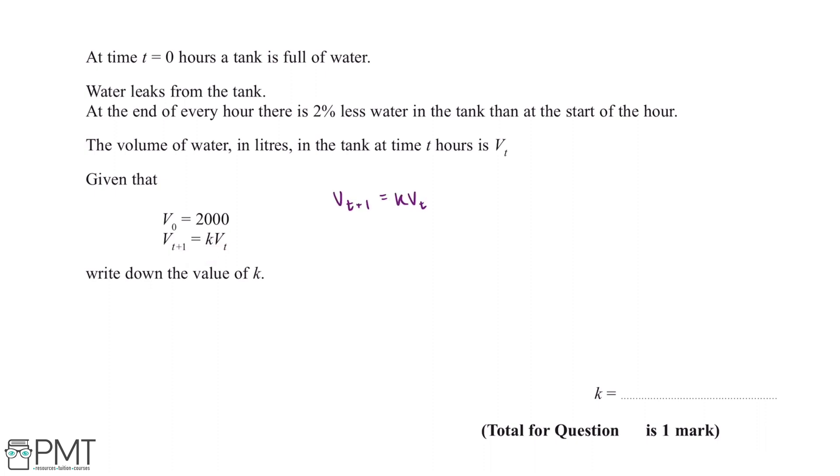So what this tells us is that V0 plus 1 is equal to K multiplied by V0. So V0 plus 1 will be equal to V1 which is equal to the volume of water in litres after one hour. And this is equal to K multiplied by 2000 which is the value for V0 which we've been given.